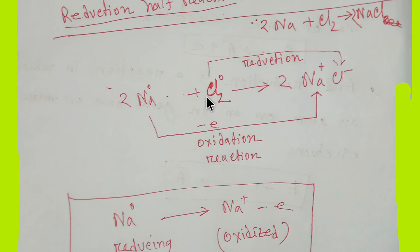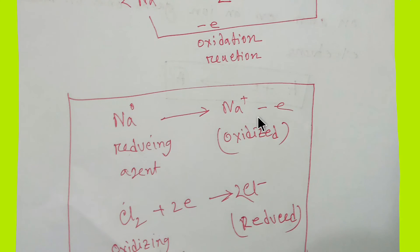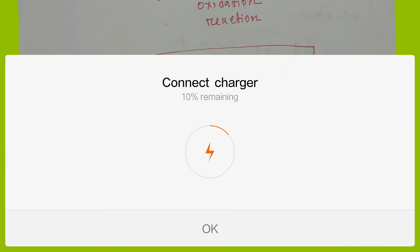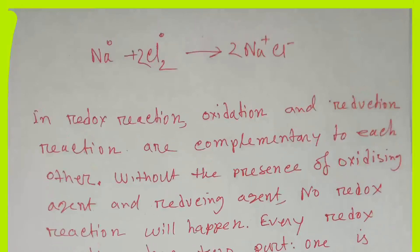Here you see the oxidation reaction involves the releasing of electrons. The reducing agent is oxidized after releasing its electron. The oxidizing agent is reduced after accepting the electron.